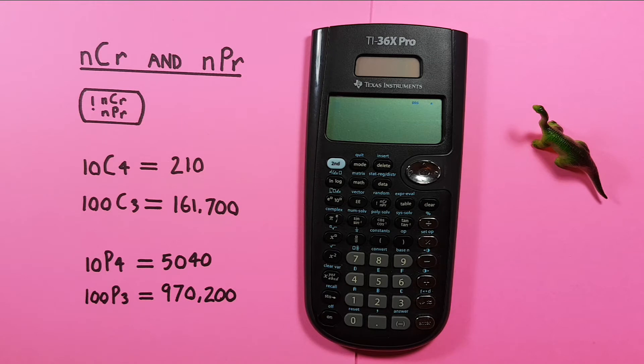Next we'll look at permutations where we choose items from a set and the order does matter. So if we want to choose 4 from a set of 10, again we enter the 10,